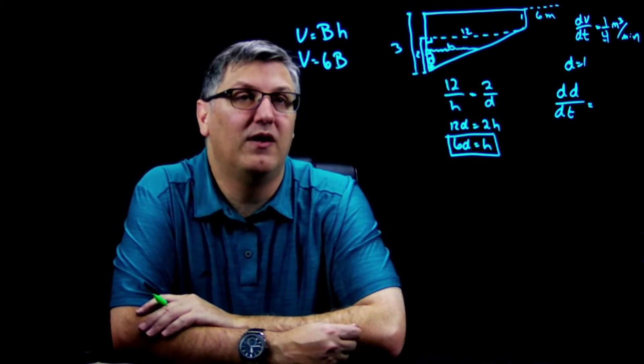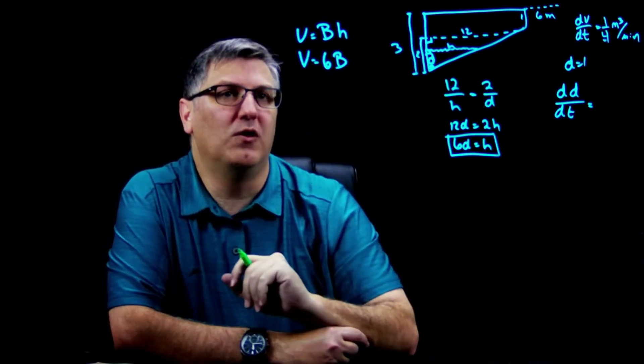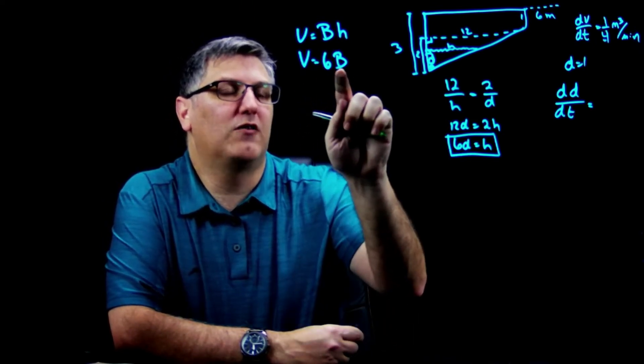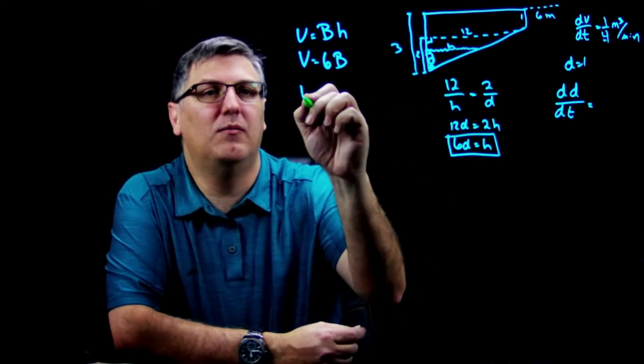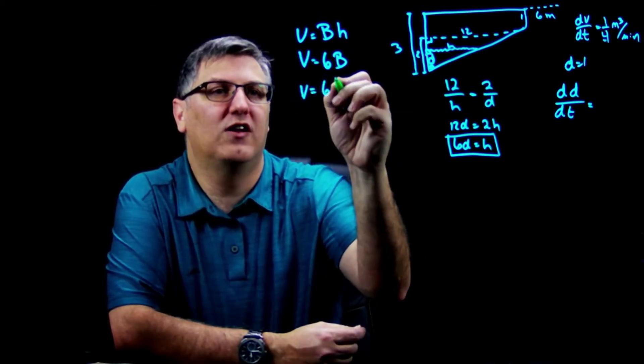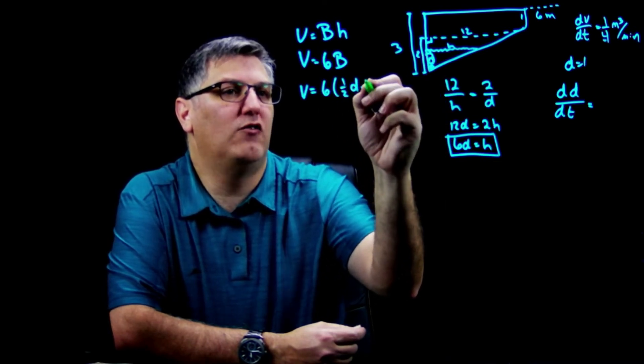V = 6 × (1/2) × d × h. Well, I can clean this up and I get V = 3dh.